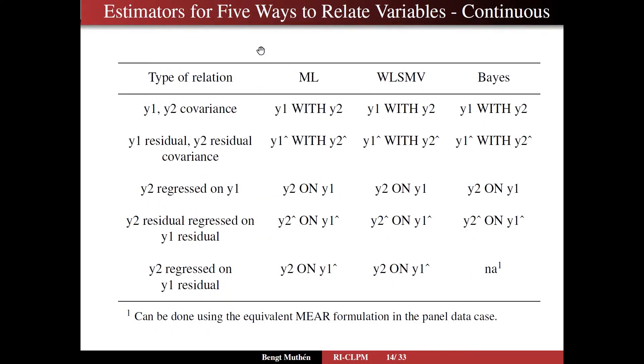Now to summarize this, in the continuous case, we have the five different ways to relate variables. One, two, three, four, five, like we had on the previous page.